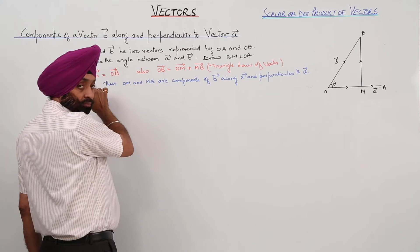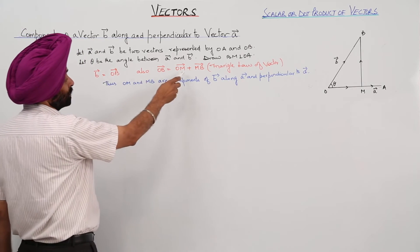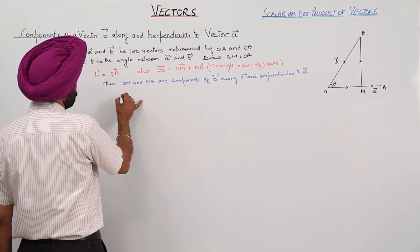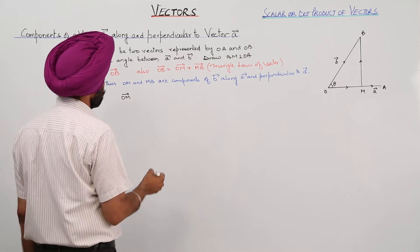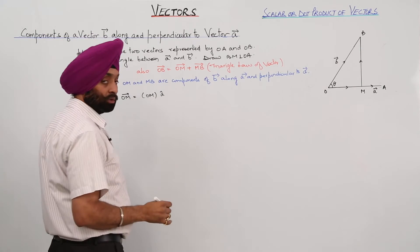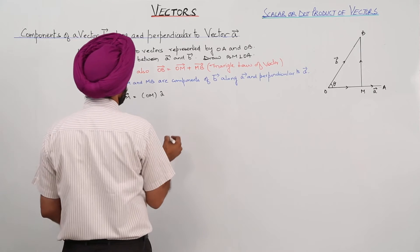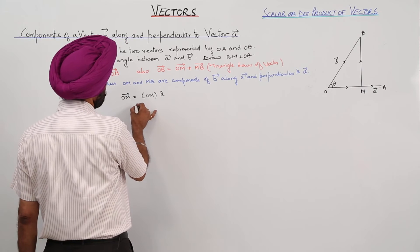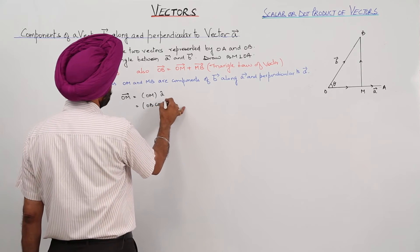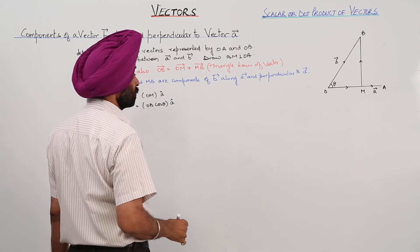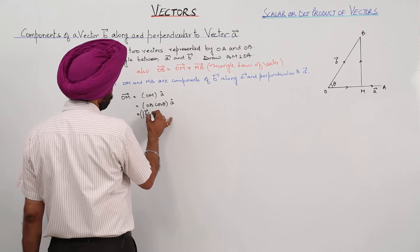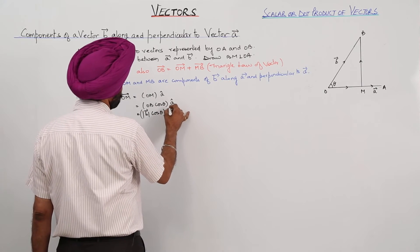By the triangle law, vector B equals OB, and OB equals OM plus MB. So OM and MB are the components. Now, how can we write vector OM? We can write it as OM with A-cap, where A-cap is a unit vector. So for OM, we can write it as OB cos theta with A-cap, and this can further be written as magnitude of B cos theta with A-cap.